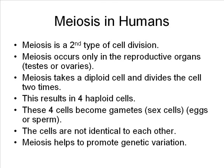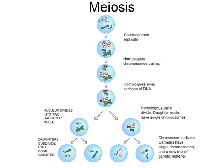In humans, replication of the DNA happens just before meiosis begins. The normal 46 chromosomes of the human somatic cells become 92. During the first stage of meiosis, meiosis I, the cell divides in two; each of the new cells has 46 chromosomes. During meiosis II, the second stage, both cells divide again. Each of these new cells is now haploid and has 23 chromosomes. These cells go on to mature and become gametes.